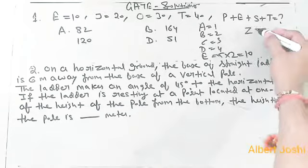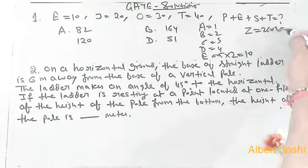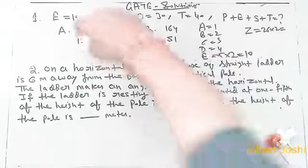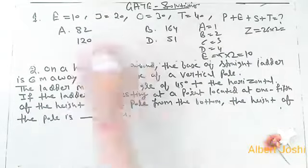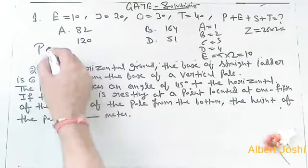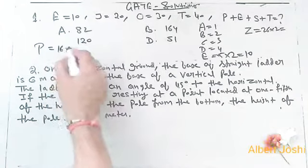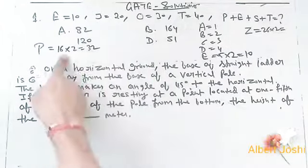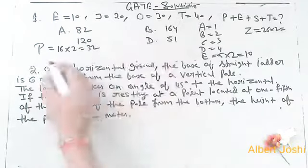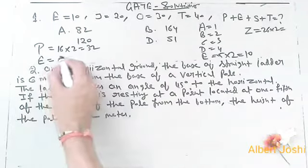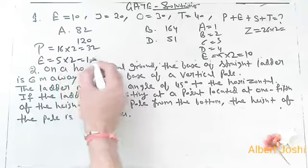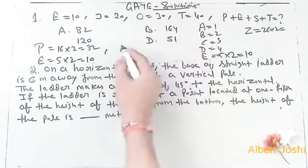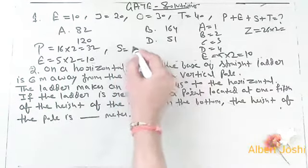Now what about P? P is actually 16. 16 into 2 equals 32 according to the alphabet position. Then E, we already know, is 5. 5 into 2 equals 10. Then S is 19. 19 into 2 equals 38.